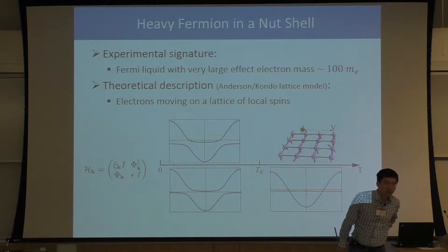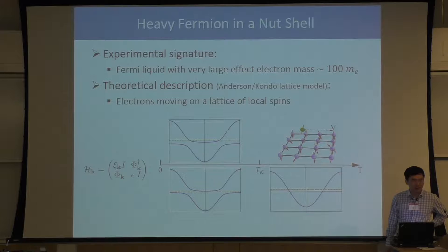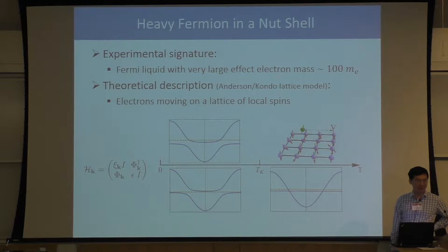It's also the atomic lattice space. It depends on materials — there are many different heavy fermion materials. Some of them have very complicated lattice structure. They may have multiple atoms in each unit cell. Some of the atoms are involved, some are not.